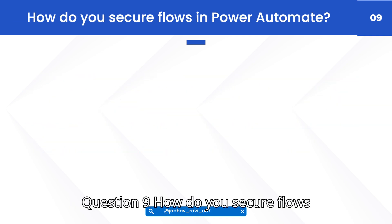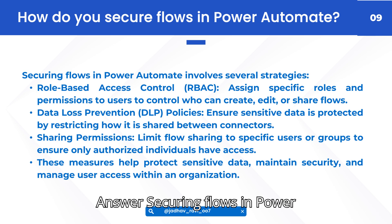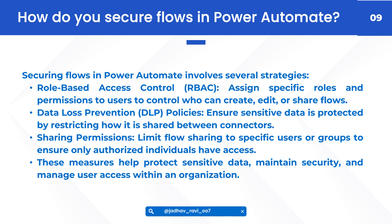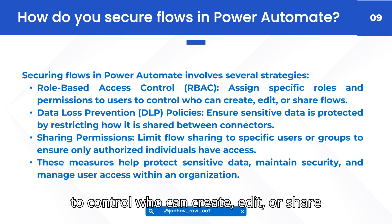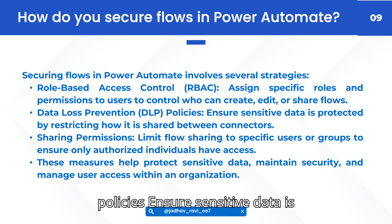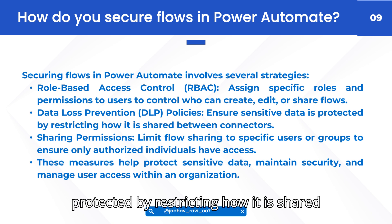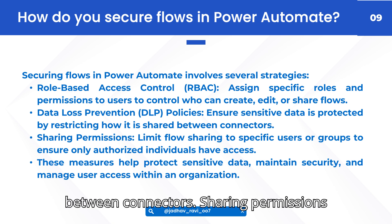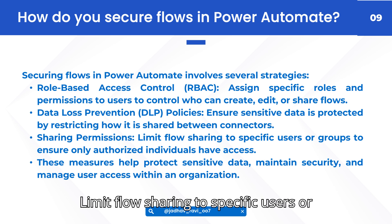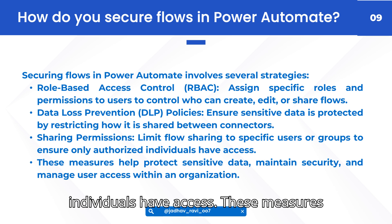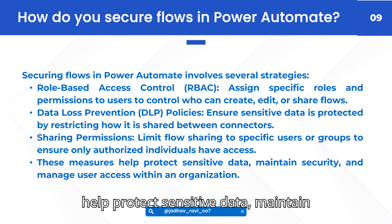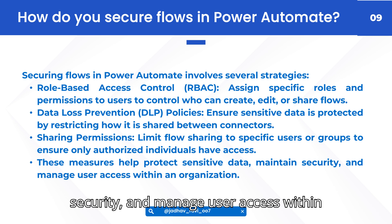Question 9: How do you secure flows in Power Automate? Answer: Securing flows in Power Automate involves several strategies. Role-based access control (RBAC) assigns specific roles and permissions to users to control who can create, edit, or share flows. Data loss prevention (DLP) policies ensure sensitive data is protected by restricting how it is shared between connectors. Sharing permissions limit flow sharing to specific users or groups to ensure only authorized individuals have access. These measures help protect sensitive data, maintain security, and manage user access within an organization.